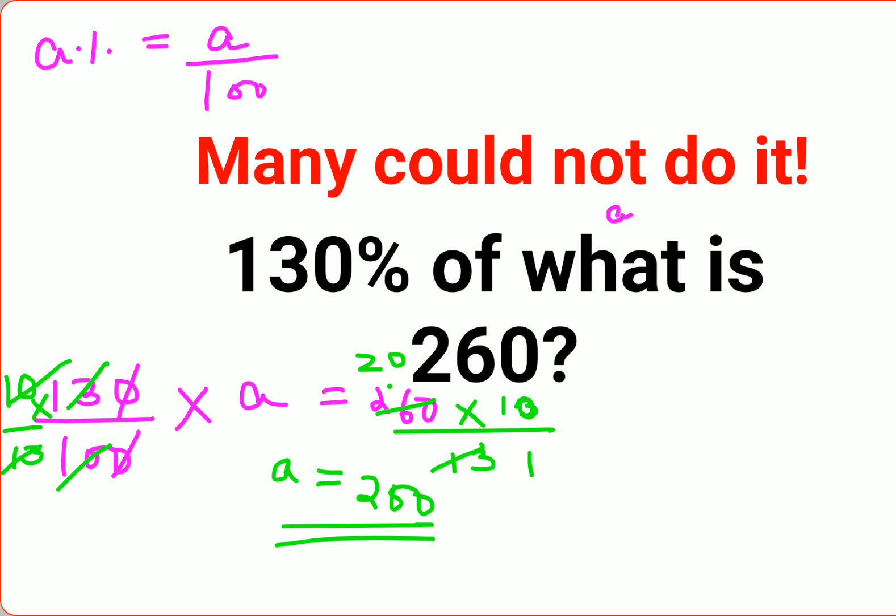So we have 130 percent of a, that is 200. Now we will try and solve this and see if we are getting the answer as 260. So you see, the 2s are cancelling, so 130 into 2 gets you 260, which is what we were asking in the question.